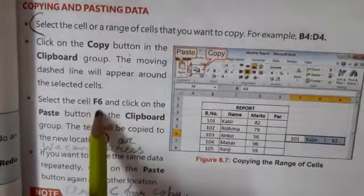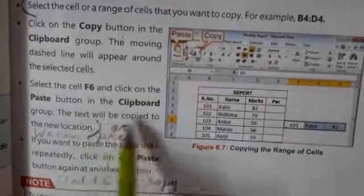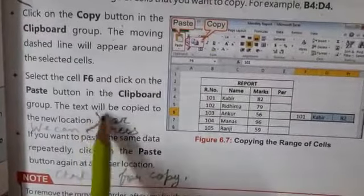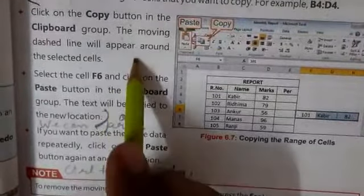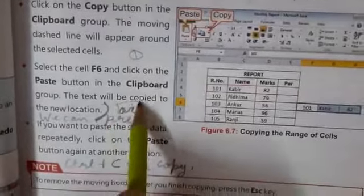Then select the cell F6 and click on the Paste button from the Clipboard group. The text will be copied to the new location. Till here you have to write, and this is the first method.